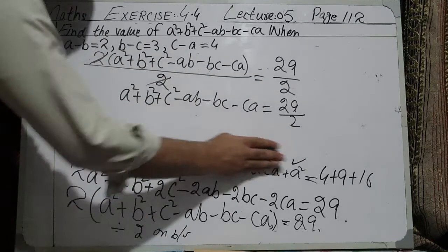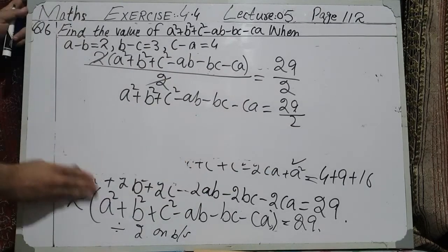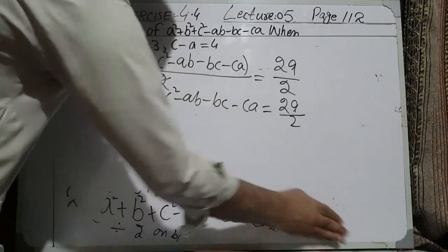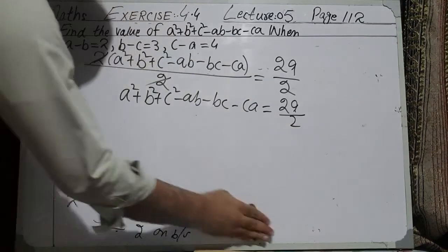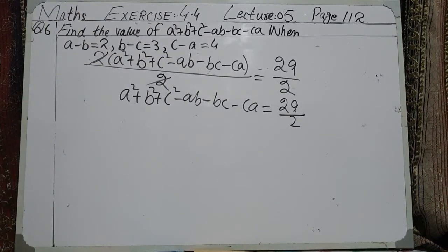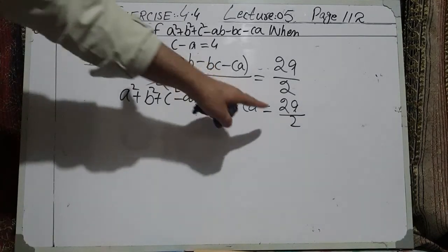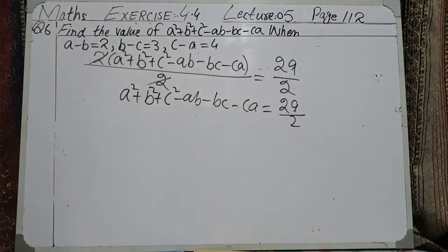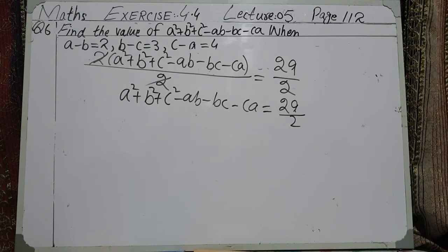The 2 cancels out, so A square plus B square plus C square minus AB minus BC minus CA equals 29 divided by 2. This is our answer and the exercise is done.